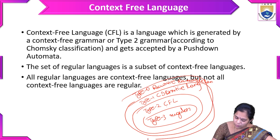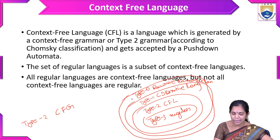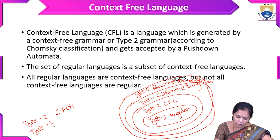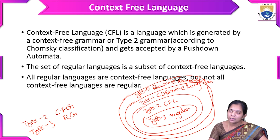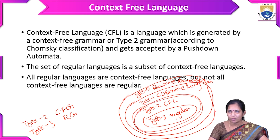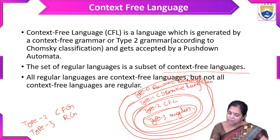So we have four types of grammar, and type 2 is context-free language (CFG). The regular language is a subset of context-free languages. With this diagram we can say that the set of regular languages is a subset of context-free languages — all regular languages are context-free languages.